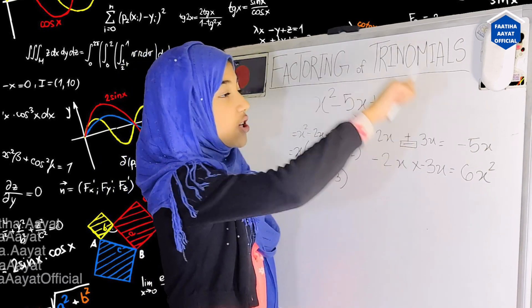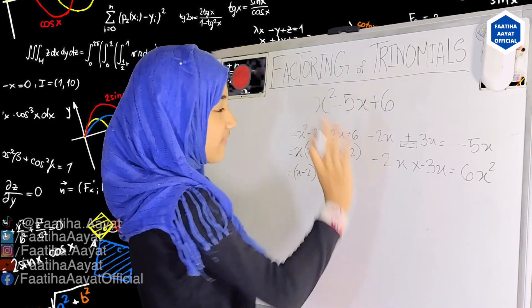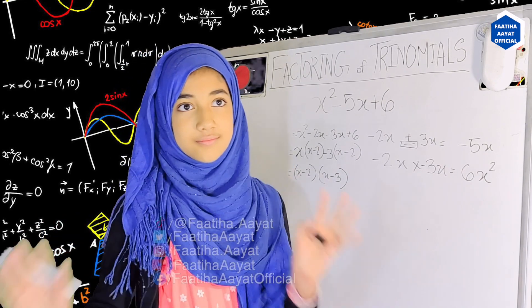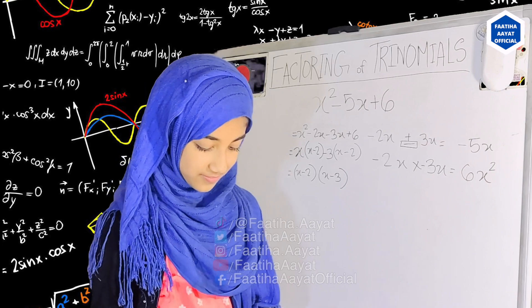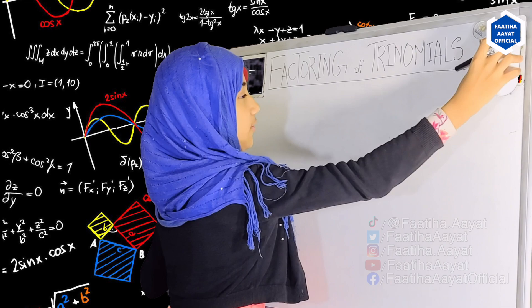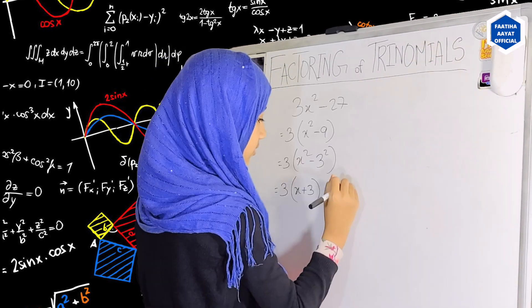Thank you very much Fatia, but since you love factorizing too much, let me try you another one. What will you do if you have 3x squared minus 27? Time is limited. What will you do? This should be answered.